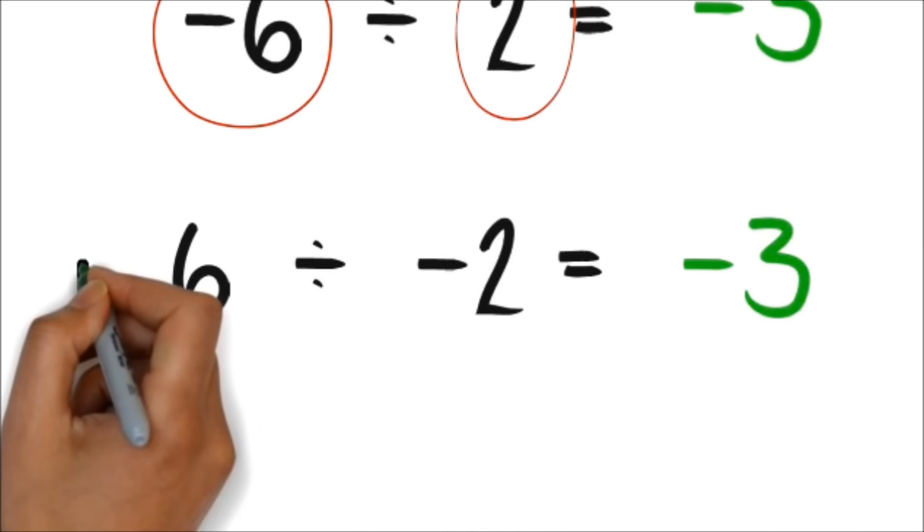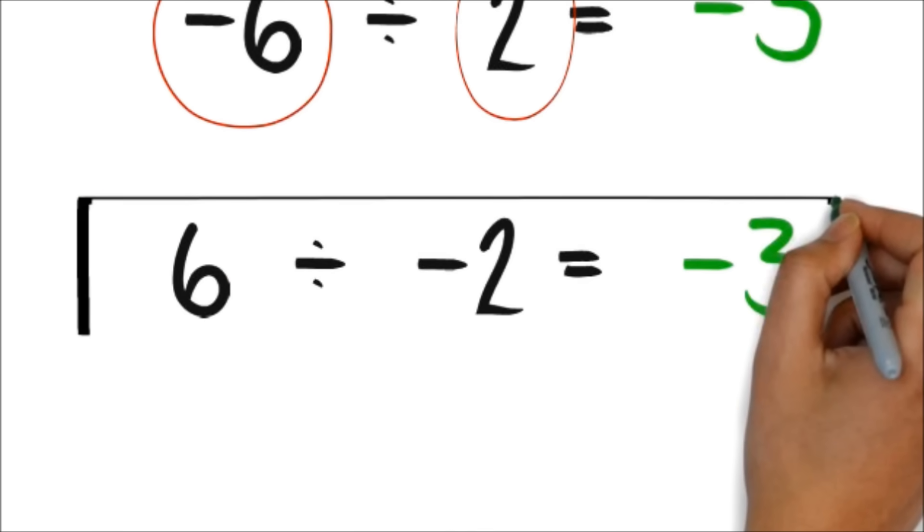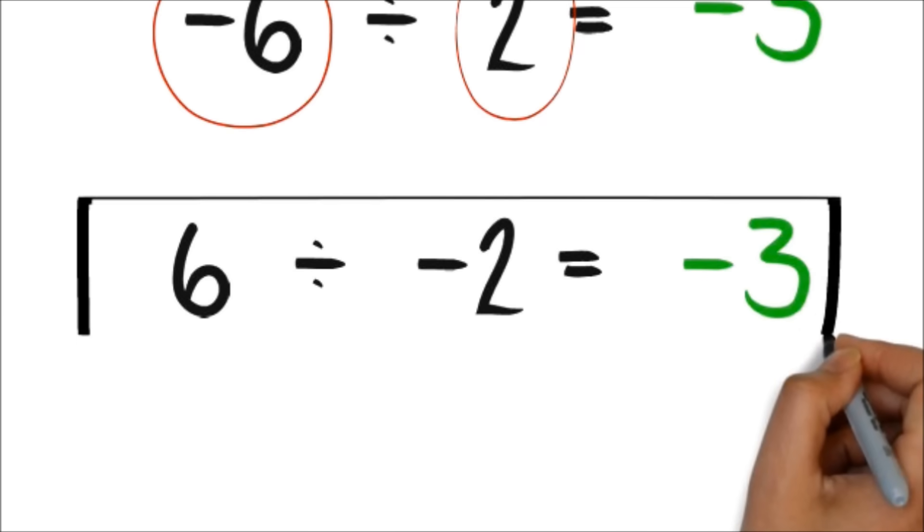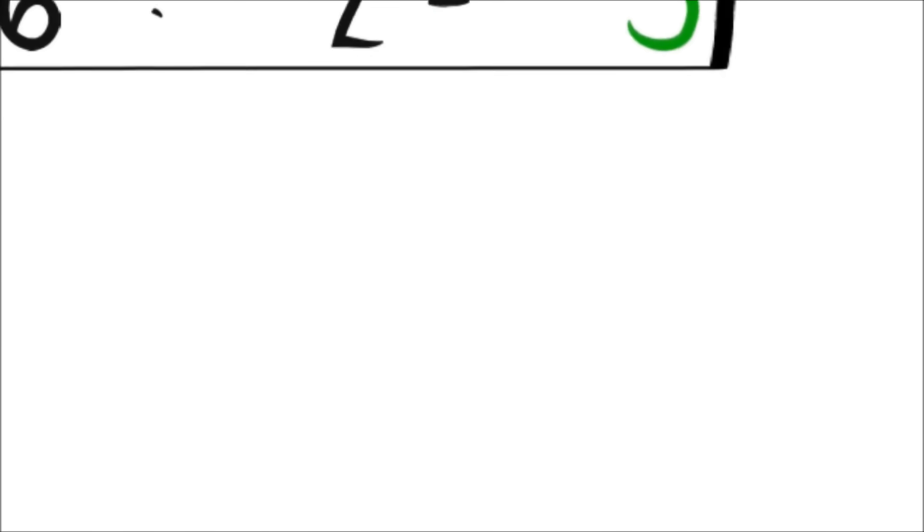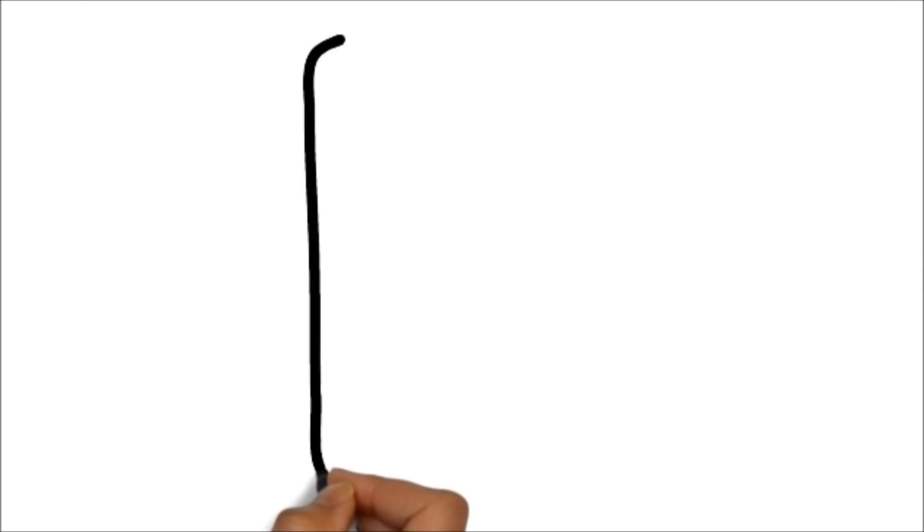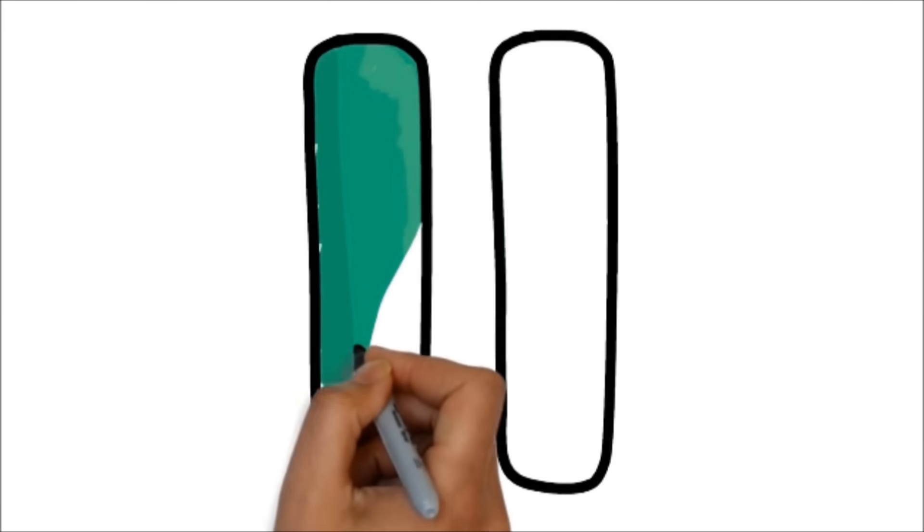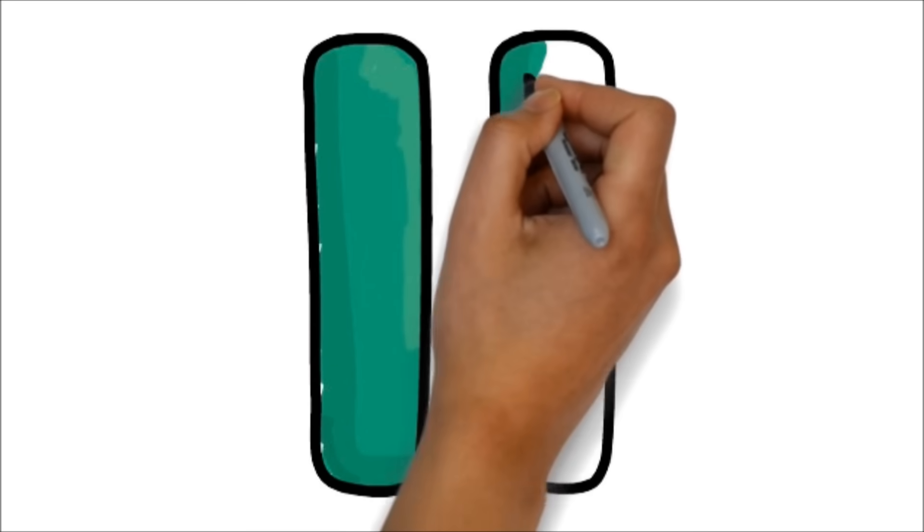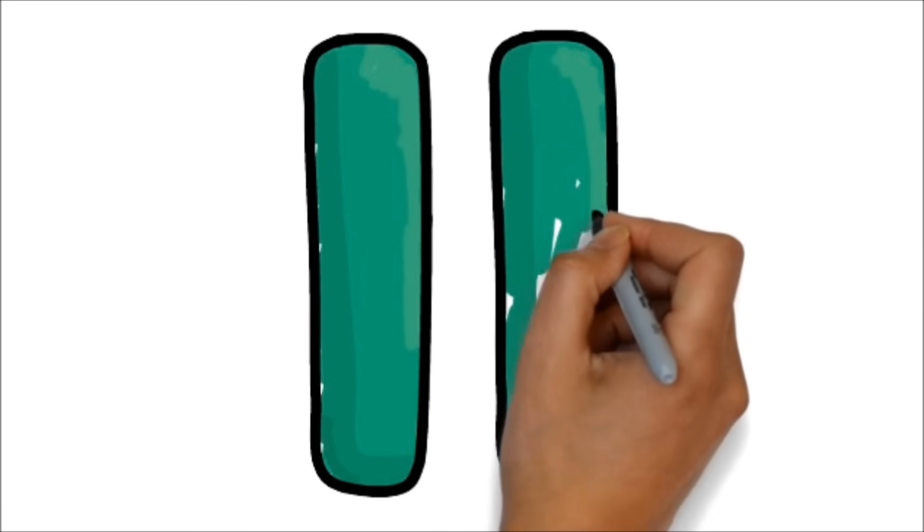negative 6 divided by negative 2 will give us negative 3. Here, again, one of the numbers is positive, and the other is negative. Please pause this video, and make sure you are familiar with the multiplication and division of negative numbers before we move on.